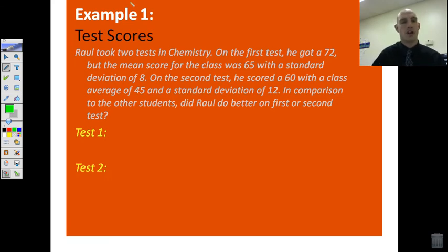Let's do an actual example. Raoul took two tests in chemistry. On the first test, he got a 72, but the mean score for the class was 65 with a standard deviation of 8. On the second test, he scored a 60 with a class average of 45 and a standard deviation of 12. In comparison to other students, did Raoul do better on the first or the second test? Immediately off the bat, we want to say, well, he got a 72 and the mean was 65. He got a 60, and the class average was 45 on the second one. I would be inclined to say that the 60 would be better because he had 15 above the average. But let's see what the z-score tells us.